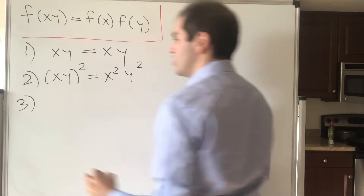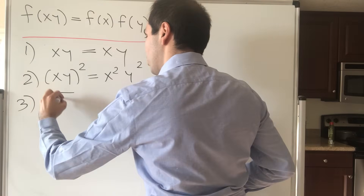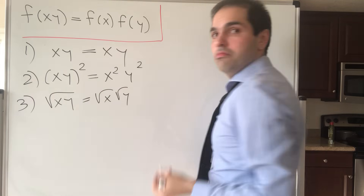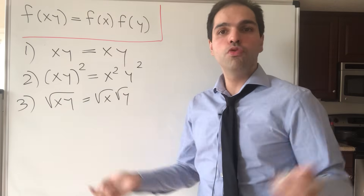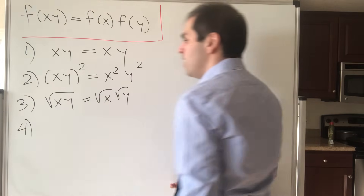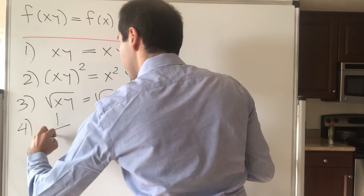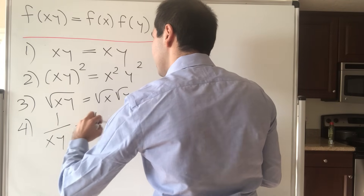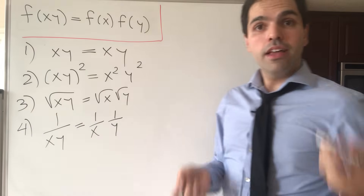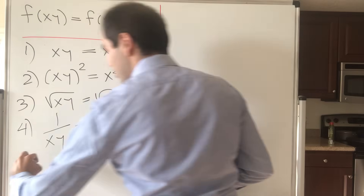But there are more functions like that. For instance, square root: the square root of xy equals the square root of x times the square root of y. And even cube root, fourth root, et cetera. Also 1 over x — so negative powers work: 1 over (xy) is 1 over x times 1 over y. And it doesn't even have to be differentiable — the absolute value of x works.